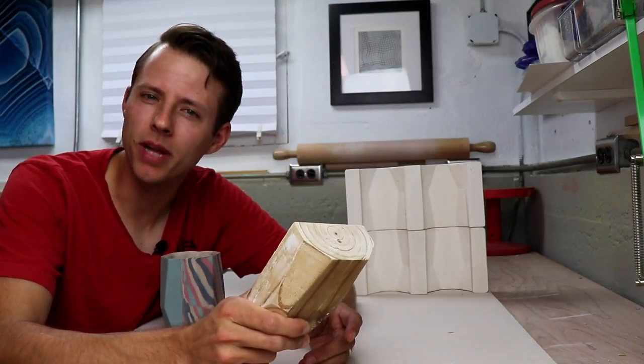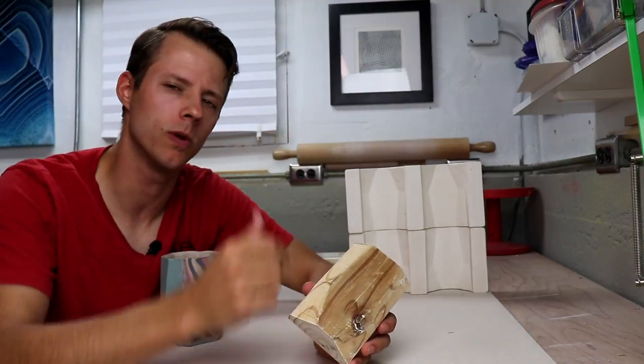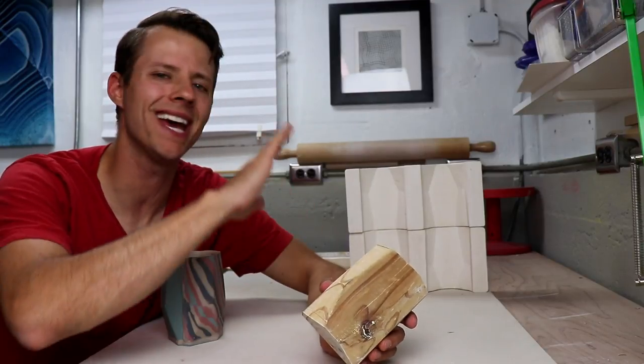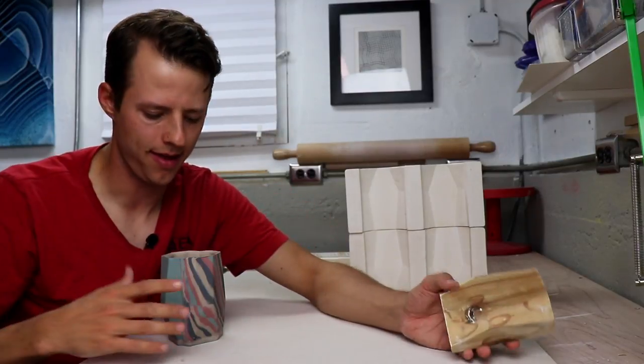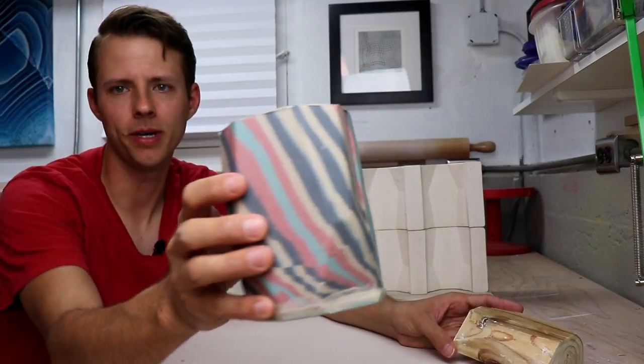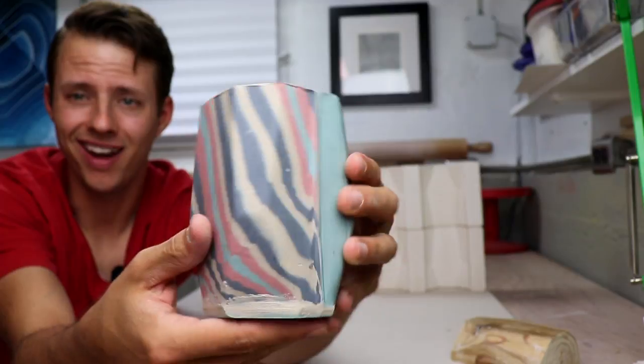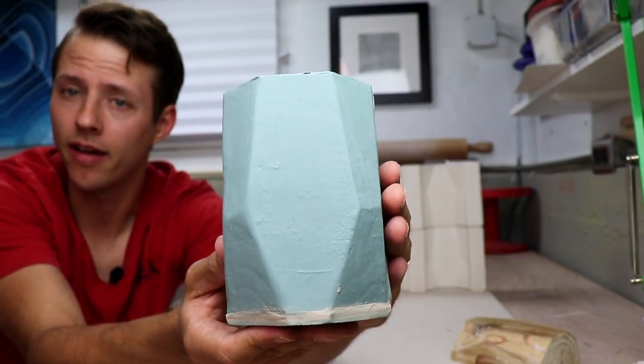Now what's nice about a plaster mold that's in two pieces like this one is that you have the option to add two different pieces of clay on the inside of the plaster mold. That's how I made this cup here. So for this cup I used a Narakomi slab for this half and I used a blue slab for the other half.